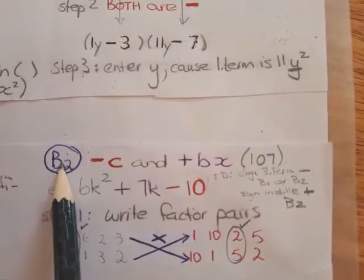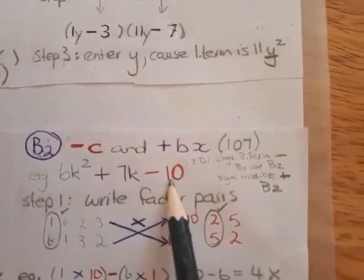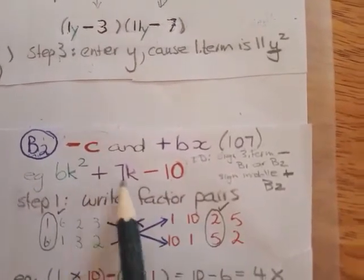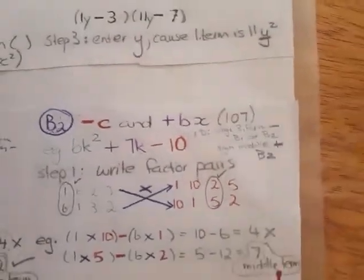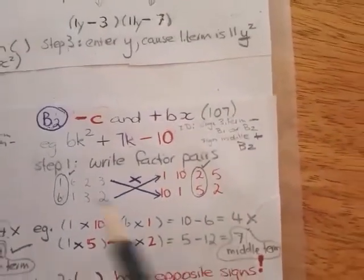So I repeat, for B2, you have a negative third term and you have a positive middle term. Right, so again, people, the basic method is the same.